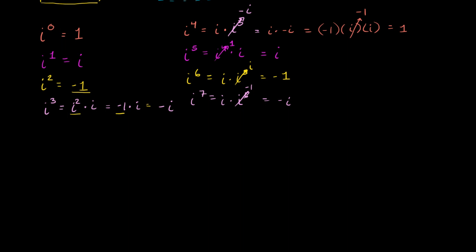Now that we've seen that as we take i to higher and higher powers, it cycles between 1, i, negative 1, negative i, then back to 1, i, negative 1, and negative i — I want to see if we can tackle some trickier problems. You might see these surface, and they're kind of fun to do, to realize that you can use this cycling of powers of i to, on the back of an envelope, take arbitrarily high powers of i.